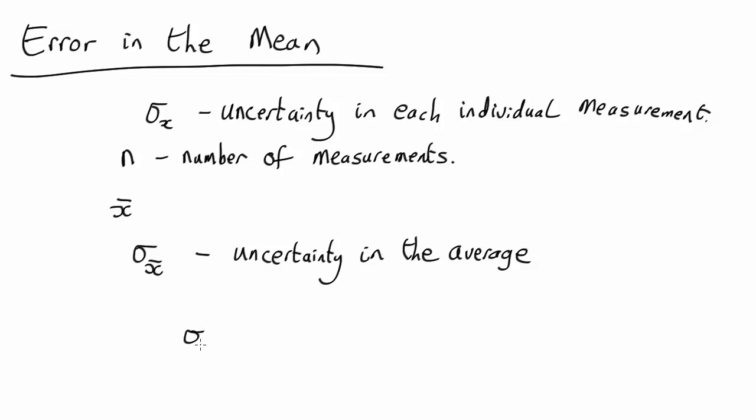In fact, the equation is: the error in the mean is equal to the error in each data point divided by root n minus 1.